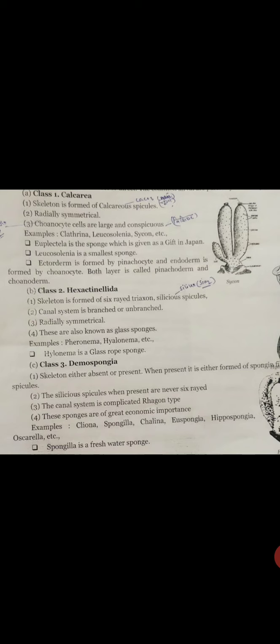Canal system is complicated, rhagon type. These sponges are of greater economic importance. All are marine except the freshwater family Spongillidae.